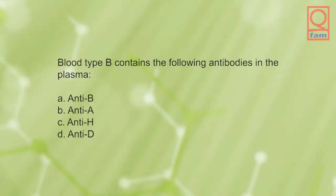Blood type B contains the following antibodies in the plasma: A) anti-B, B) anti-A, C) anti-H, D) anti-D.